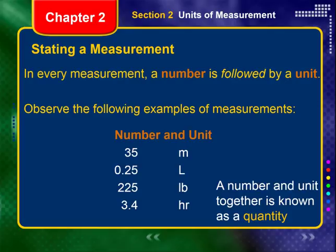For example, 35 meters: 35 is the number, meter is the unit. 0.25 liters: 0.25 is the number, liter is the unit. A number and a unit together is known as a quantity. So 225 pounds is a quantity, and 3.4 hours is a quantity.